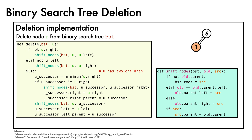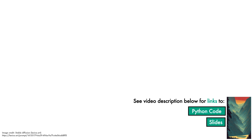We'll close by noting that, as with other operations we've looked at, the complexity of the deletion is big O of h, where h is the height of the tree. In the video description, you can find links to Python code to implement binary search trees, slides, and references. I hope you have a wonderful day.